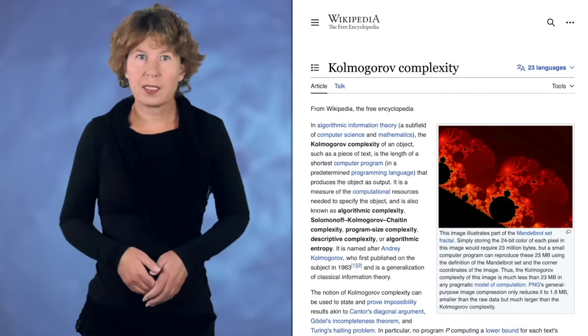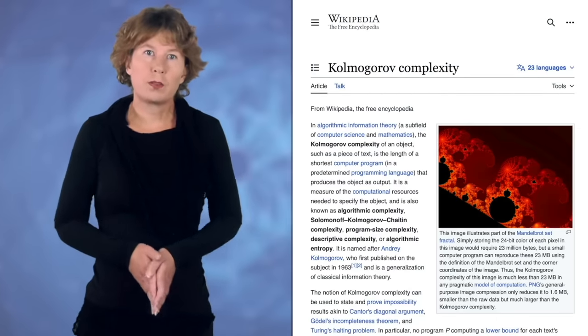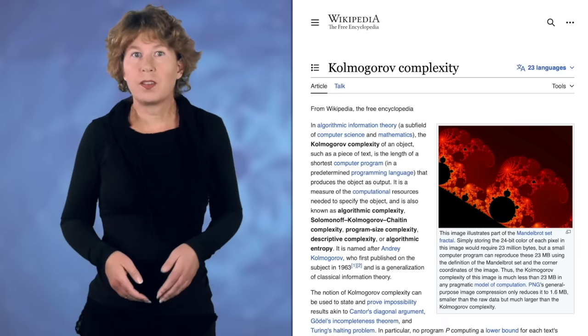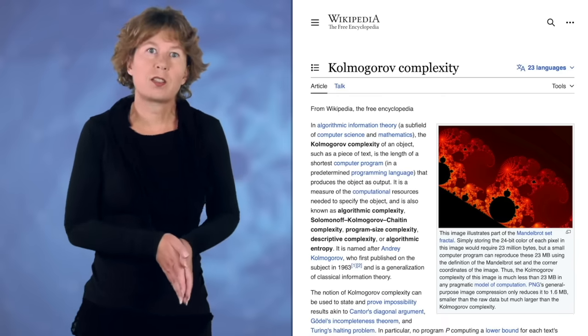The most used one is probably algorithmic complexity, also known as Kolmogorov complexity. That's the length of the shortest possible computer program that can generate the data that describes your system. This seems to make sense at first sight, doesn't it? Certainly, you need a more difficult algorithm to calculate what a baby does than what a rock does, right?